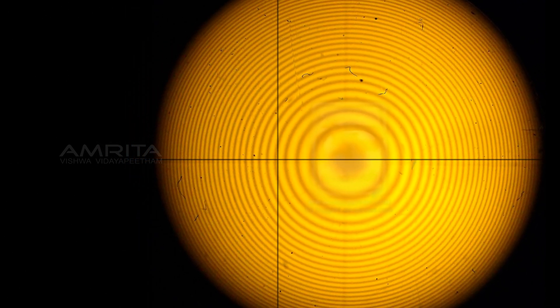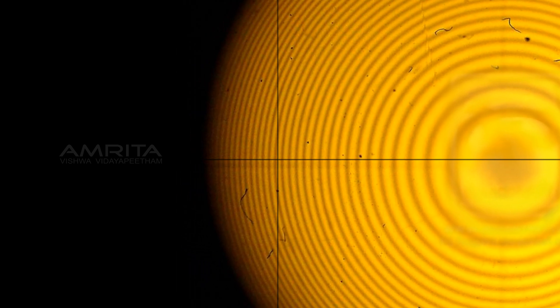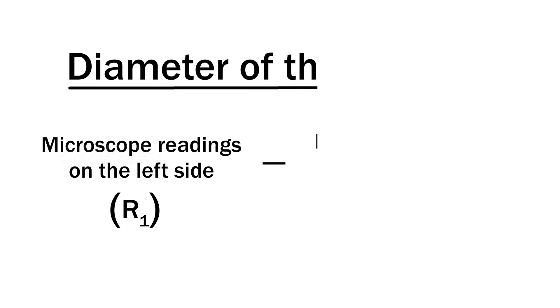Fix the vertical cross wire of the microscope on the 20th bright ring at the leftmost end and record the reading on the horizontal scale. Repeat these measurements for microscope movement from left to right and evaluate the diameters of different rings.